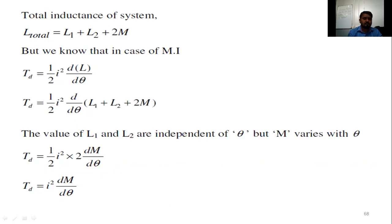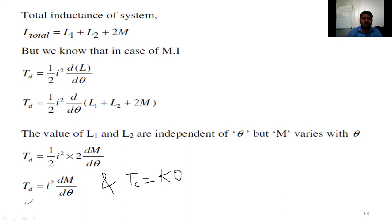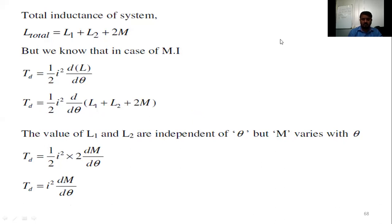So Td = I² × dM/dθ. We already know Tc = kθ, and at equilibrium Td = Tc. Therefore kθ = I² × dM/dθ, giving us θ = (I²/k) × dM/dθ. This is the torque or deflection equation.